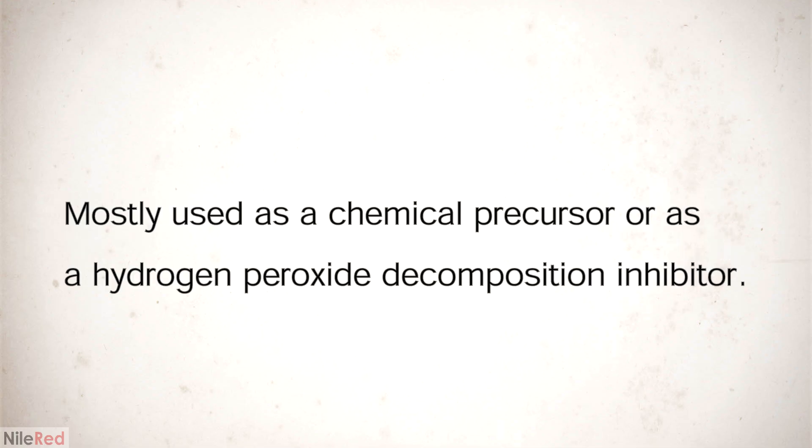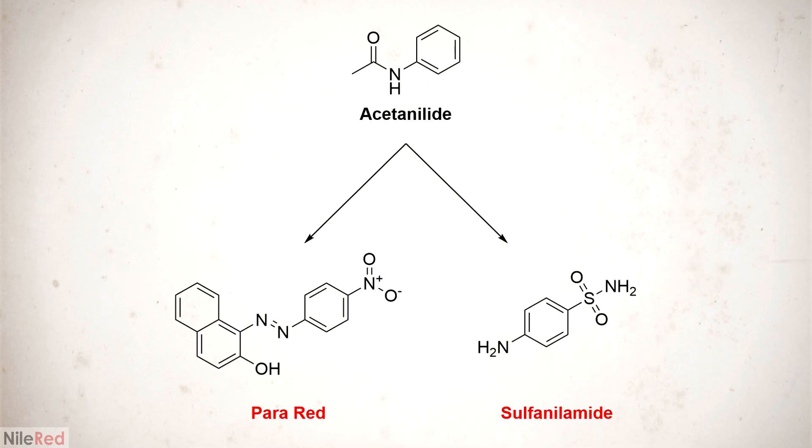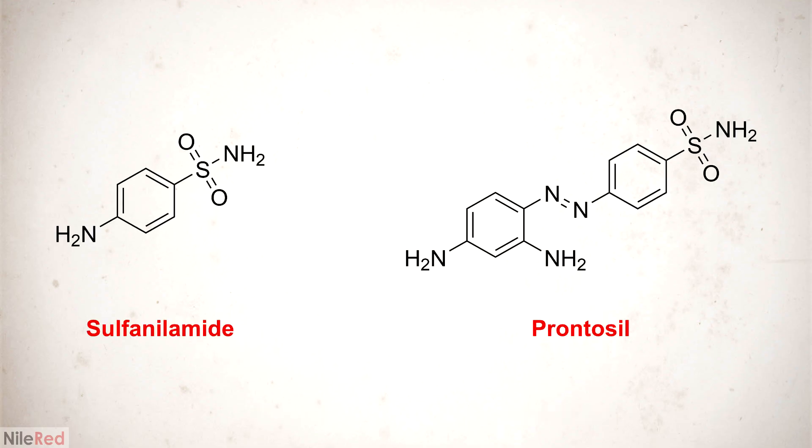Nowadays, acetanilide is mostly used as a chemical precursor to dyes and pharmaceuticals, or as an inhibitor of hydrogen peroxide decomposition. I plan to use it to make the dye para-red, as well as the antibiotic sulfanilamide. Although penicillin was the first true antibiotic to be discovered, sulfanilamide and a related drug Prontocil were the first antibiotics to be mass-produced.